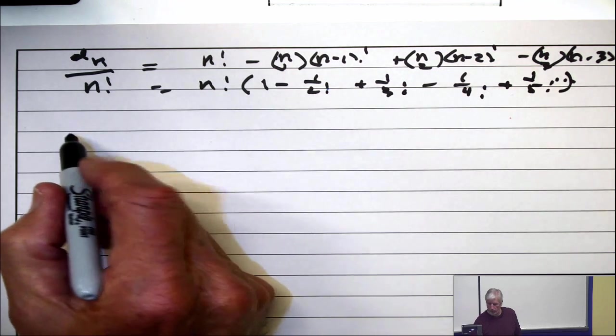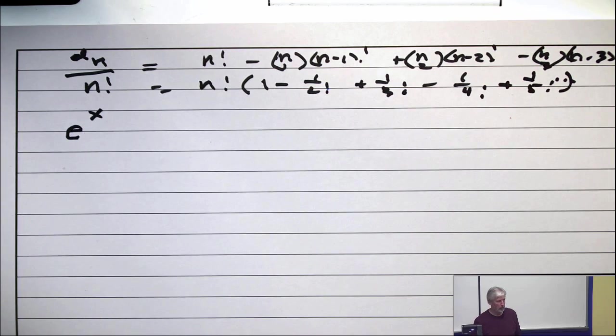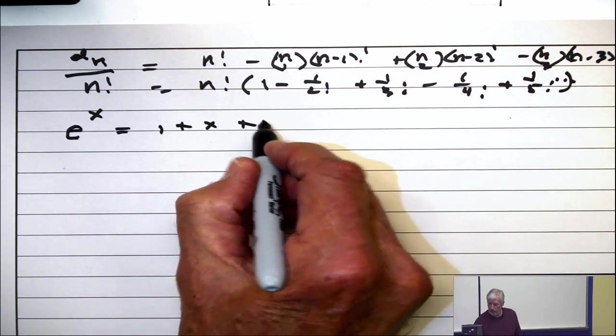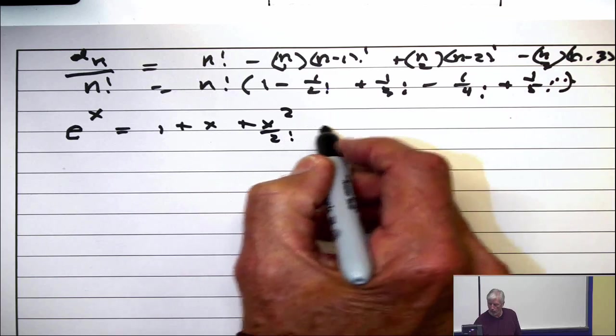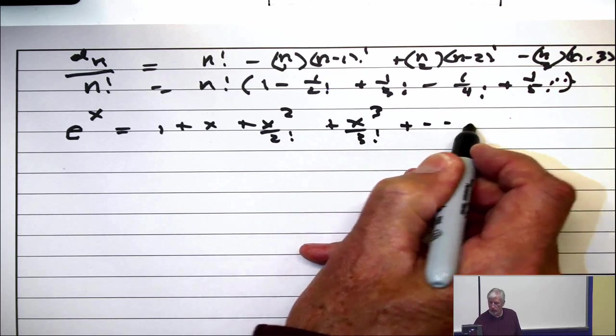What's the Taylor series for E to the X? Taylor series for E to the X is 1 plus X plus X squared over 2 factorial, plus X cubed over 3 factorial, plus, etc. Like that, right?